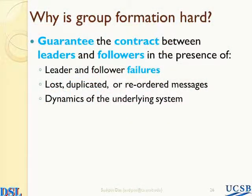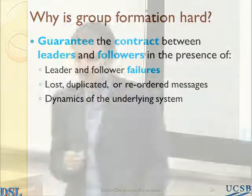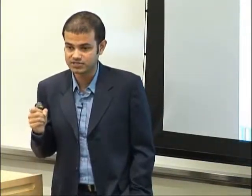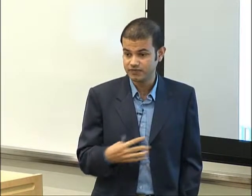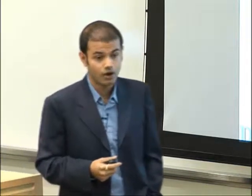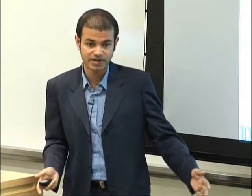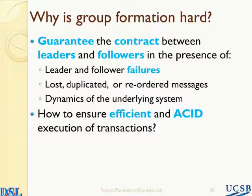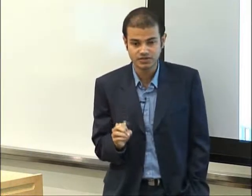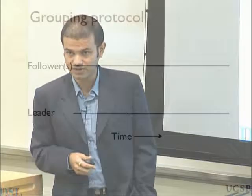The challenges include: failures in the presence of lost, duplicated, or reordered messages within the network arising from network failures; or in the presence of dynamics of the underlying system. You still want to guarantee correctness in the presence of that. And now that I've brought things together at one node, how do I efficiently execute ACID transactions on these dynamically formed groups?